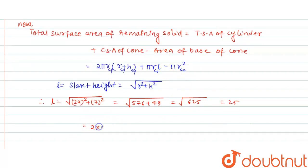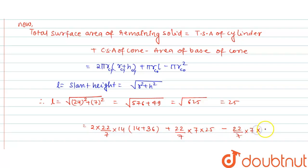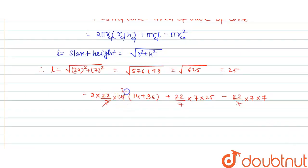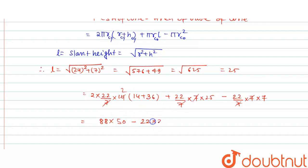Substituting the values: 2 × (22/7) × 14 × (14 + 36) + (22/7) × 7 × 25 − (22/7) × 7 × 7. Cancelling 7 where applicable, we get 2 × 22 × 2 × 50 = 4400, plus 22 × 25 = 550, minus 22 × 7 = 154.